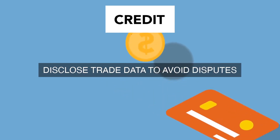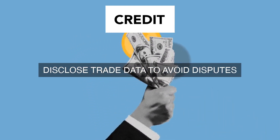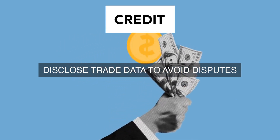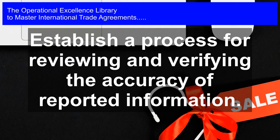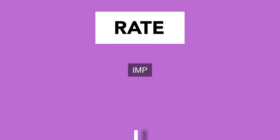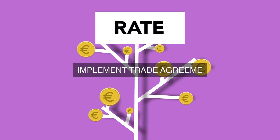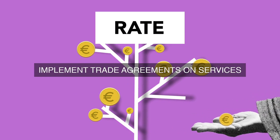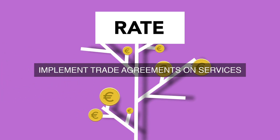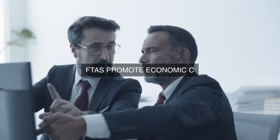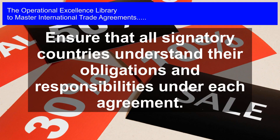Specific reporting and disclosure obligations under FTAs and BITs may include: 1. Publication of laws and regulations: Signatory countries must publish their laws and regulations related to trade and investment, ensuring that stakeholders have access to up-to-date information. 2. Consultation Mechanisms: Countries must establish consultation mechanisms to facilitate dialogue and exchange of information between governments, stakeholders, and investors. 3. Dispute Settlement Transparency: FTAs and BITs often require transparency in dispute settlement procedures, including the publication of panel reports and arbitration awards.